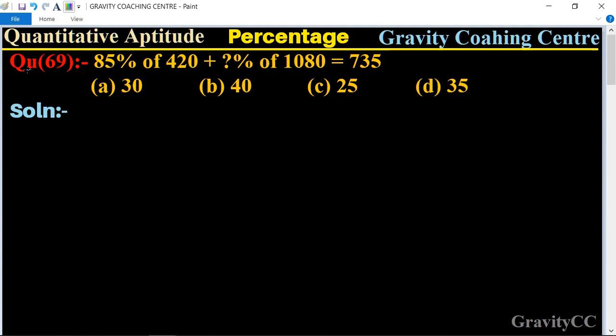Quantitative aptitude chapter percentage, question number 69: 85 percent of 420 plus question mark percentage of 1080 is equal to 735. Let the question mark be x, so 85 percent of 420 plus x percent of 1080 equals 735.